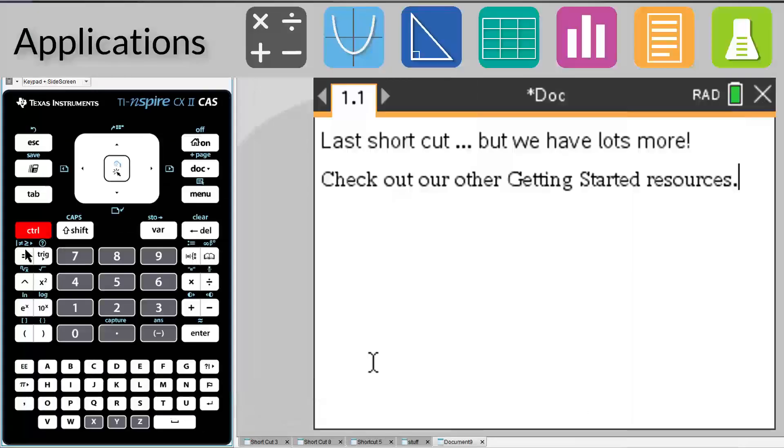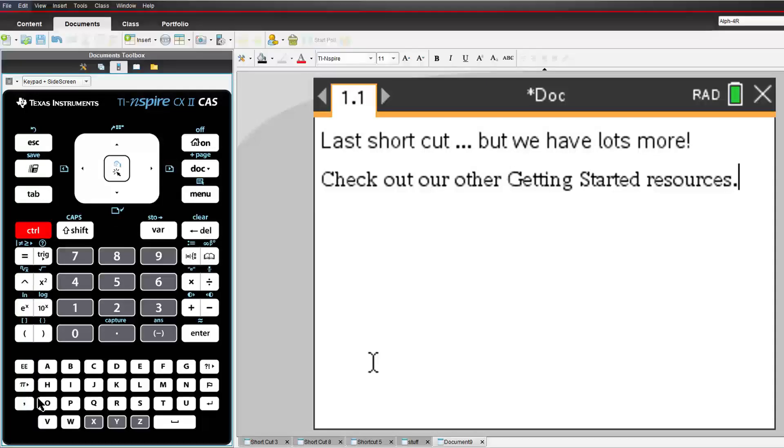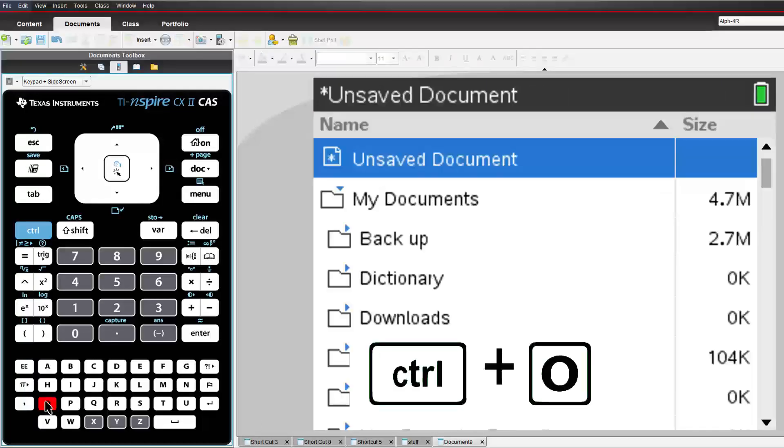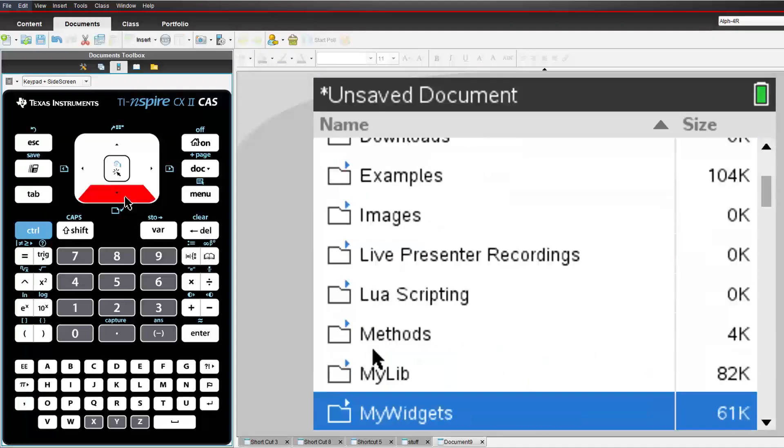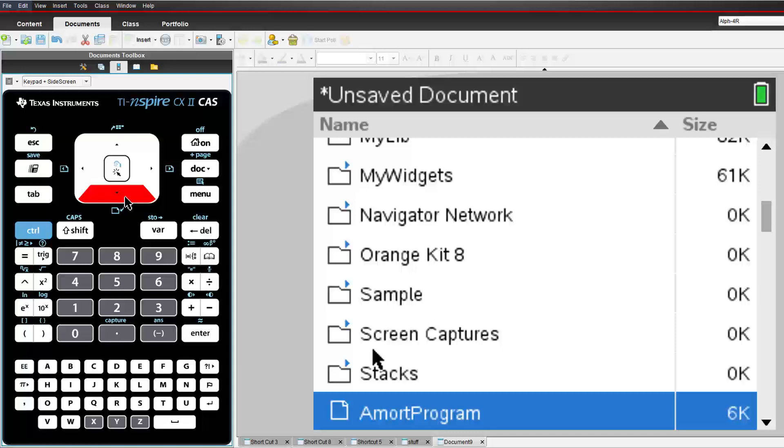If you have a saved document that you want to open, you could browse for it from the home screen, or simply press CTRL and O for open. Select the document from the available folders, just the same as you would on a computer.